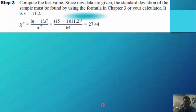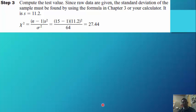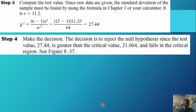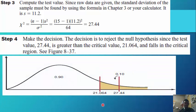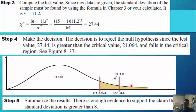Step 3: Compute the test value. Since raw data are given, the sample standard deviation must be found; using the formula, s equals 11.2. Substituting: (15 minus 1) times 11.2-squared, divided by 64, gives 27.44. Step 4: Reject the null hypothesis since the test value 27.44 is greater than the critical value 21.064 and falls in the critical region.